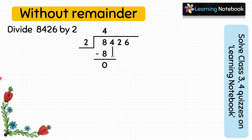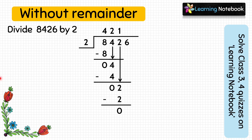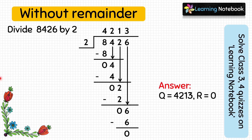Now copy the next digit 4. 2 into 2 equals 4, and 4 minus 4 equals 0. Copy the next digit 2. 2 into 1 equals 2, and 2 minus 2 equals 0. Now copy the last digit 6. 2 into 3 equals 6, and 6 minus 6 equals 0. So we write the answer as quotient equals 4213 and remainder equals 0.